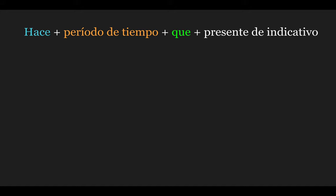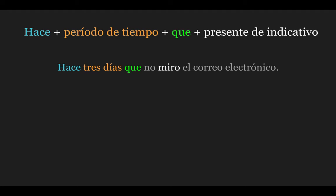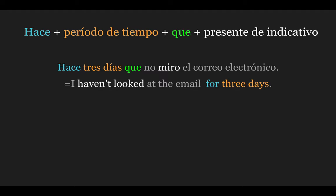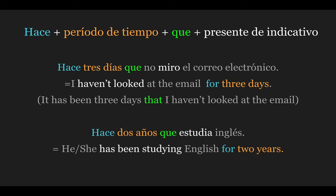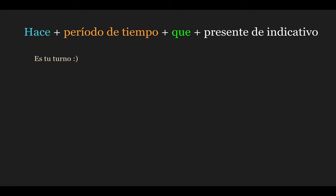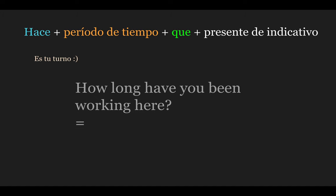Now let's look at the last formula: hace + período de tiempo + que + presente de indicativo. For example: Hace tres días que no miro el correo electrónico — 'I haven't looked at the email for three days.' You can also translate this more literally as 'It has been three days that I haven't looked at the email,' where que translates as 'that.' Another example: Hace dos años que estudia inglés — 'He or she has been studying English for two years.' Now it's your turn: translate 'How long have you been working here?' into Spanish.